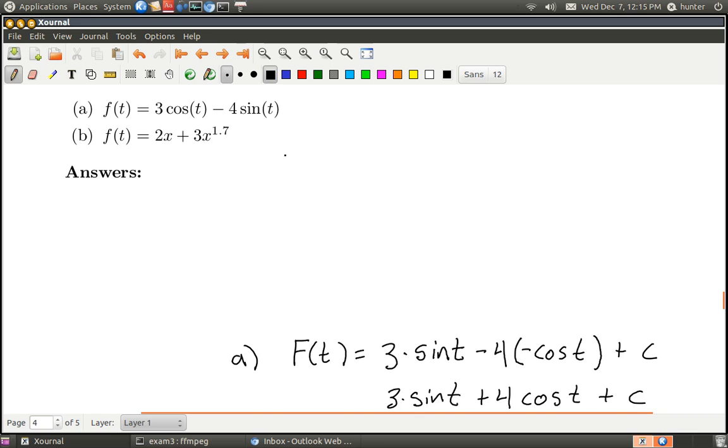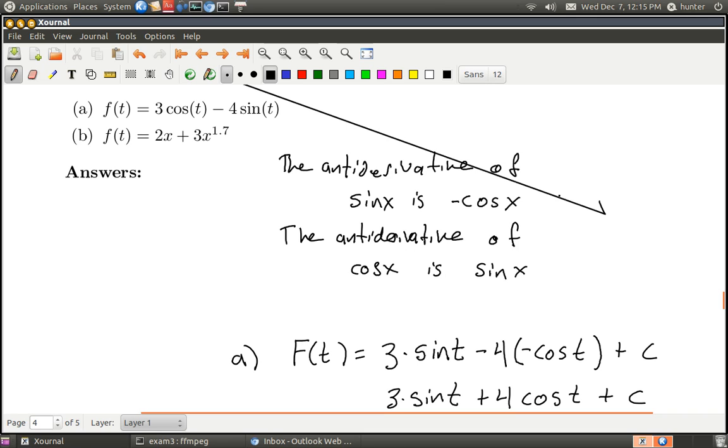So maybe I should write those down as rules. I mean, I think everybody will realize it, but the antiderivative of sine x is negative cosine x, right? And the antiderivative of cosine x is sine x, and there should maybe be some plus c's here that I'm not worrying about.